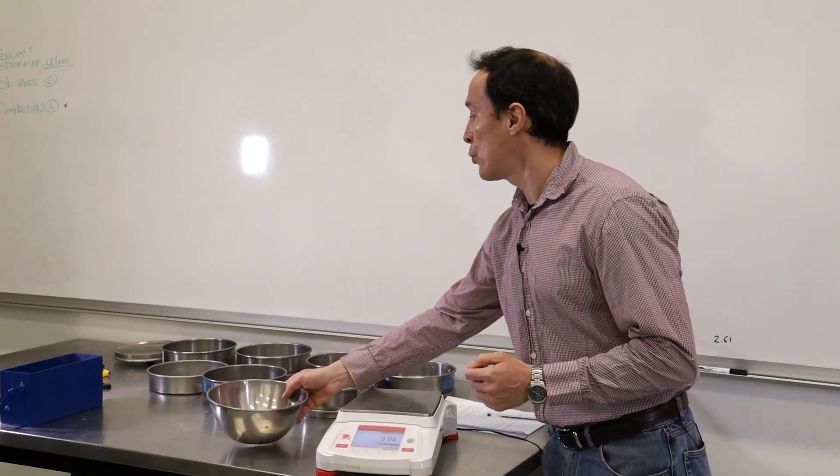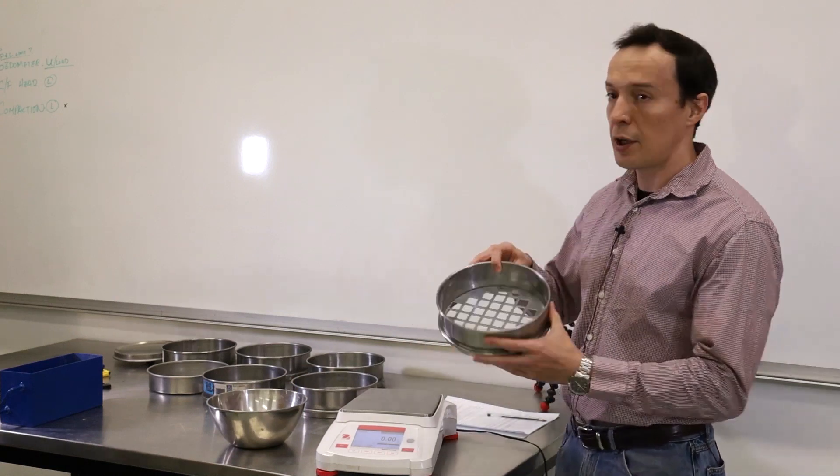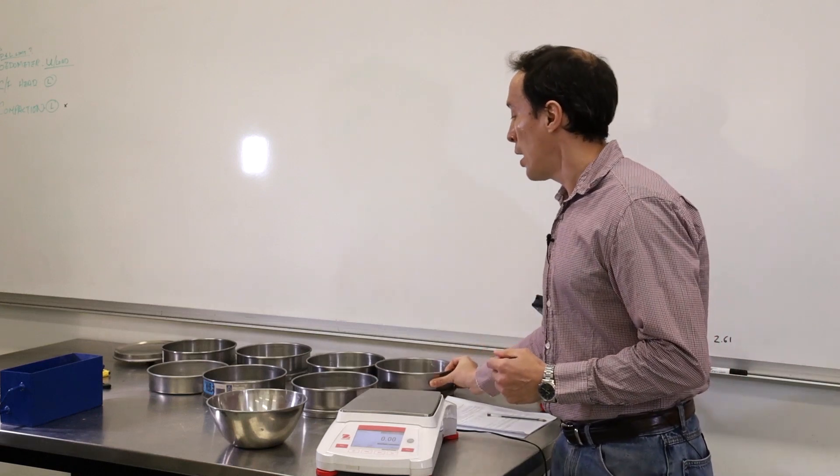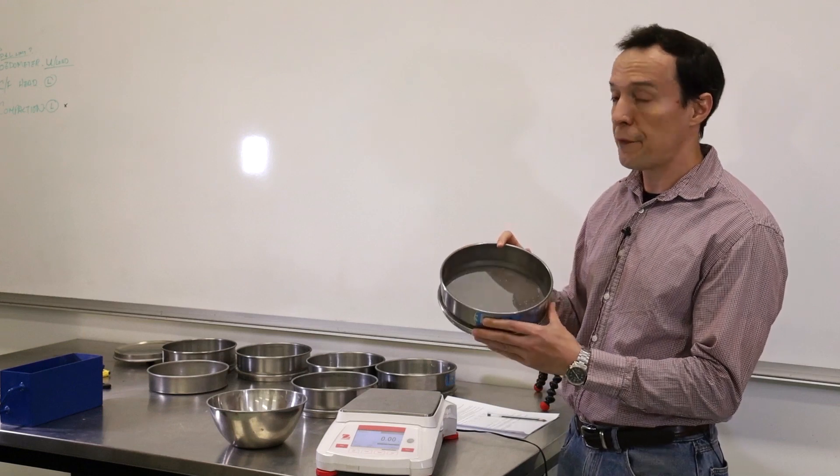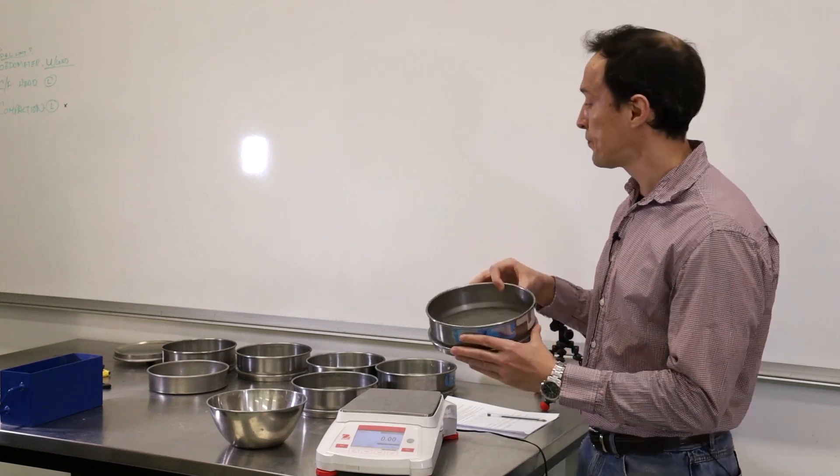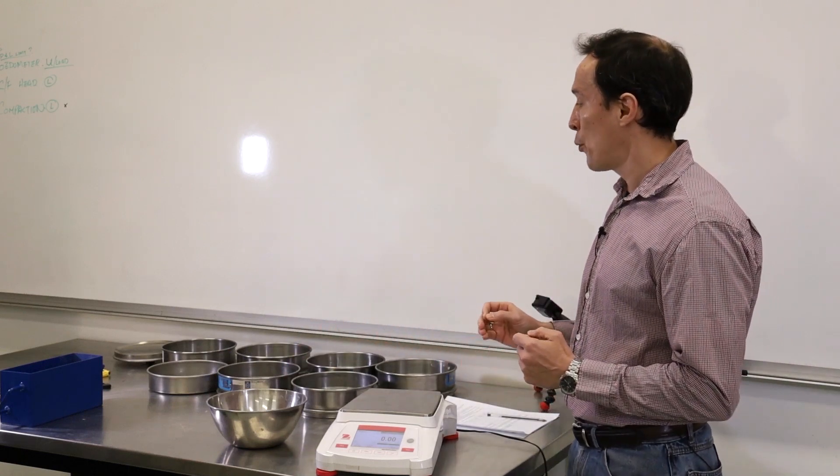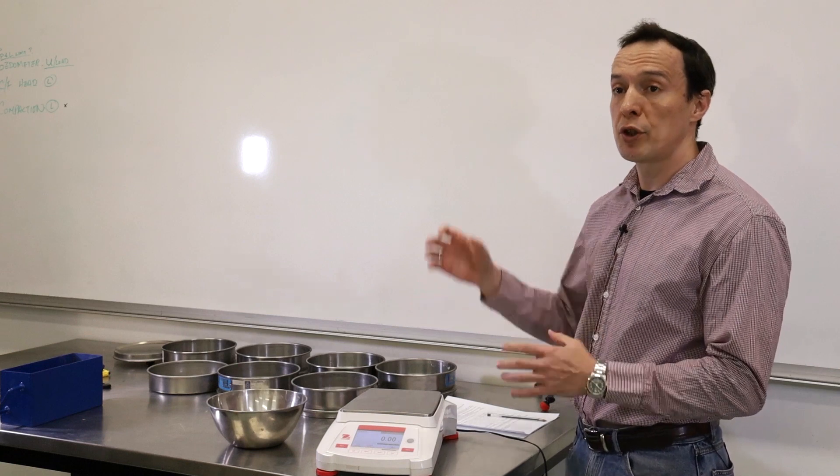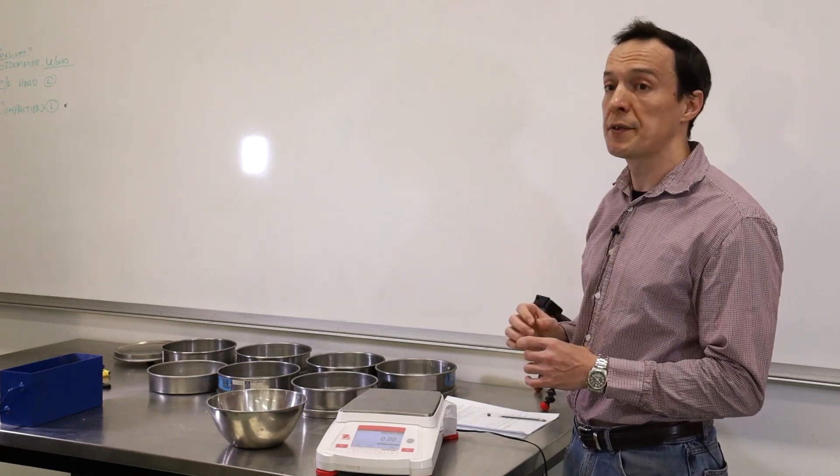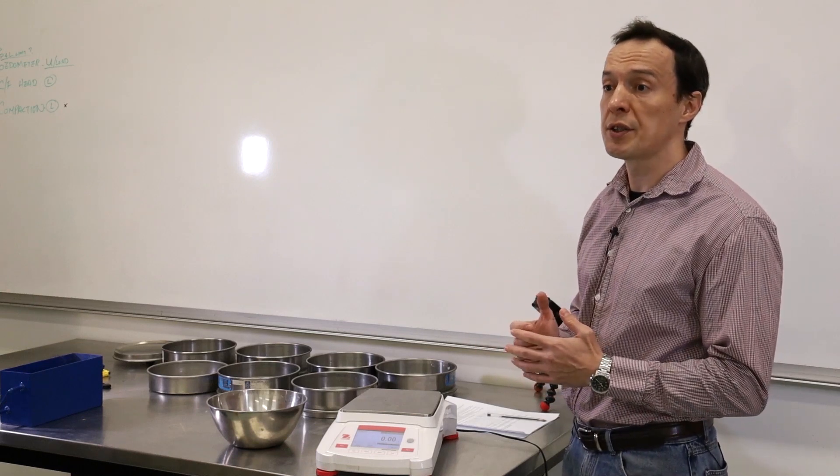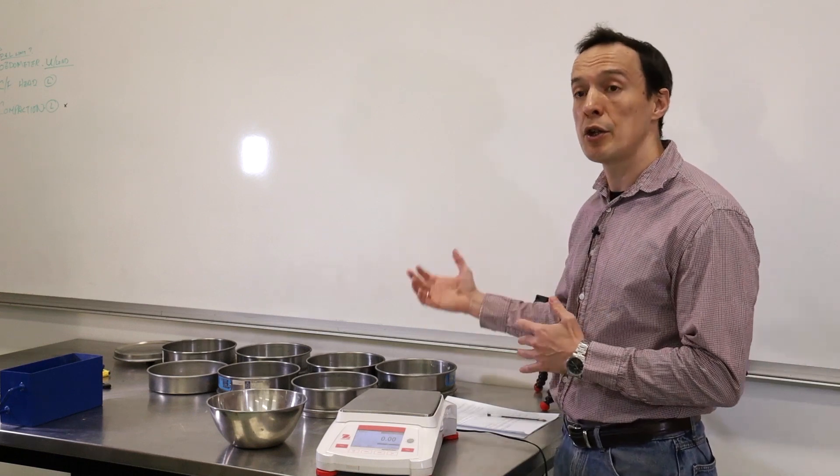To conduct this test we need a set of sieves, and we start with very large sieves. You can see large openings, and then we have very fine sieve like this one that has very fine openings. The first step of this procedure is we're going to measure the mass of each sieve, then we'll put them all together and then we pour soil in the stack of sieves, and then we'll shake it for about 10-15 minutes. After that we'll look at how much soil is retained in each of the sieve.